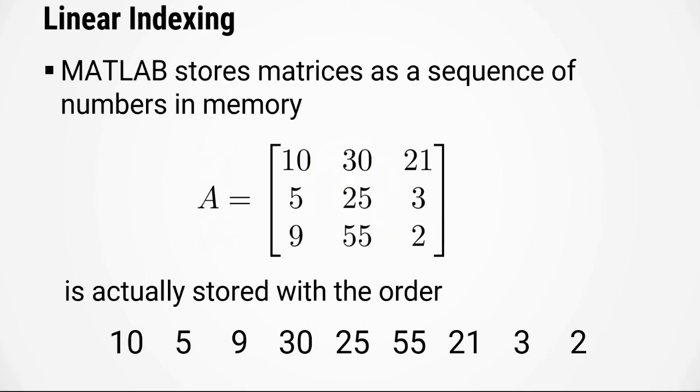Linear indexing uses this order to refer to the matrix elements. So going back to our original example, let's say we want to index the element with the value of 55. To get the linear index, we would count the number of elements as they are stored in memory. So in this case, we can see it is the 1, 2, 3, 4, 5, 6 element.